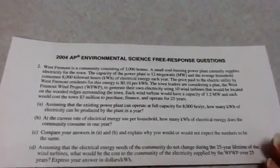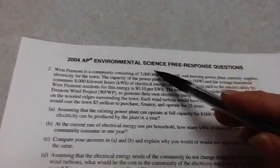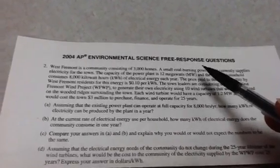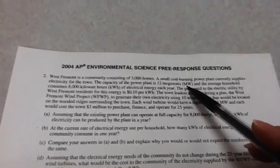So number two from the 2004 exam starts with a huge paragraph chock full of numbers that can be a little bit overwhelming. But basically, you have 3,000 houses, you have a coal-burning power plant, and the capacity is 12 megawatts. That's how much electricity it can put out.